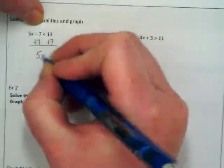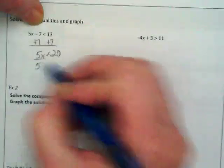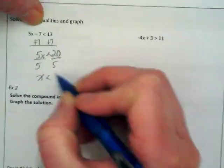So we end up with the first one: 5x is less than 20. We're going to divide by 5, and we get x is less than 4.